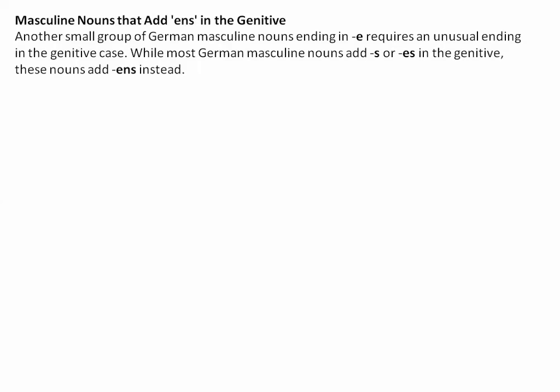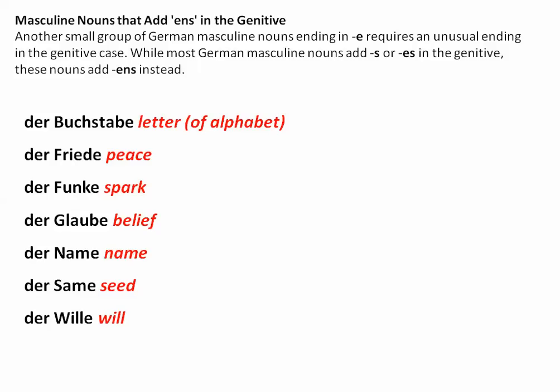Masculine nouns that end in E — which only occurs with some masculine nouns — will add NS in the genitive, so that it becomes ENS. The list of these is relatively short. Normally when you see a word that ends in E in German, you should think — if you have to guess — that it's a feminine noun, because 95% of nouns that end in E will be feminine. However, these seven are masculine and worth remembering: 'der Buchstabe,' 'der Friede,' 'der Funke,' 'der Glaube,' 'der Name,' 'der Same,' und 'der Wille.'